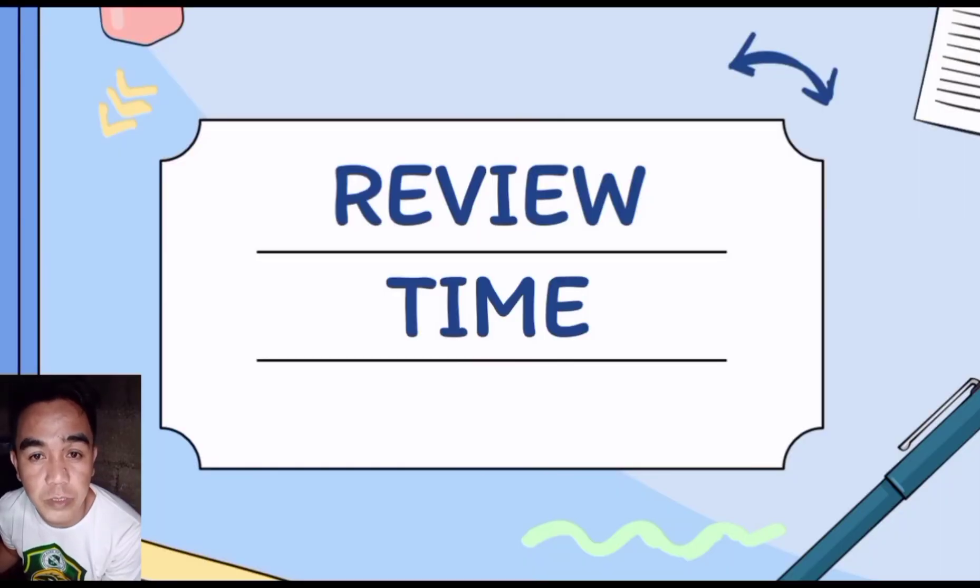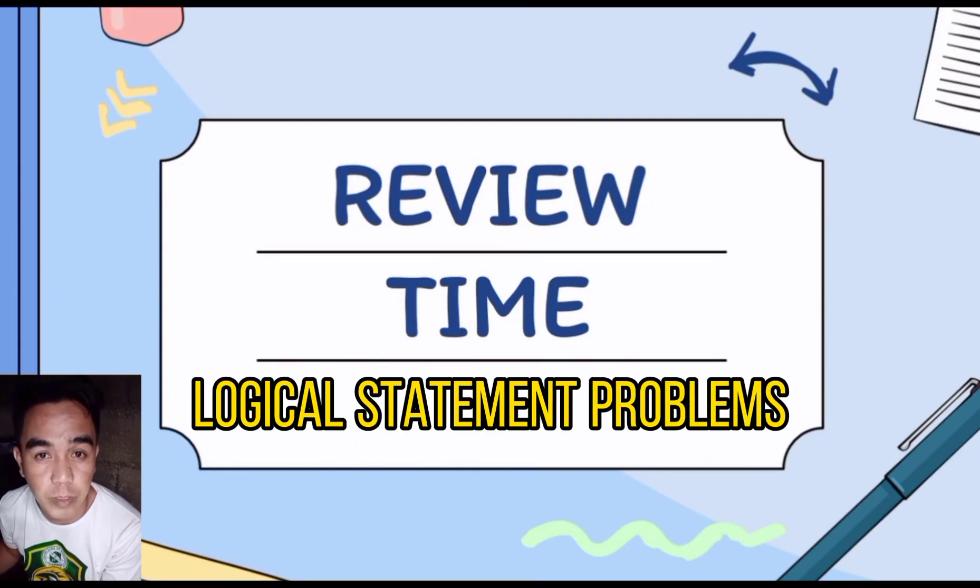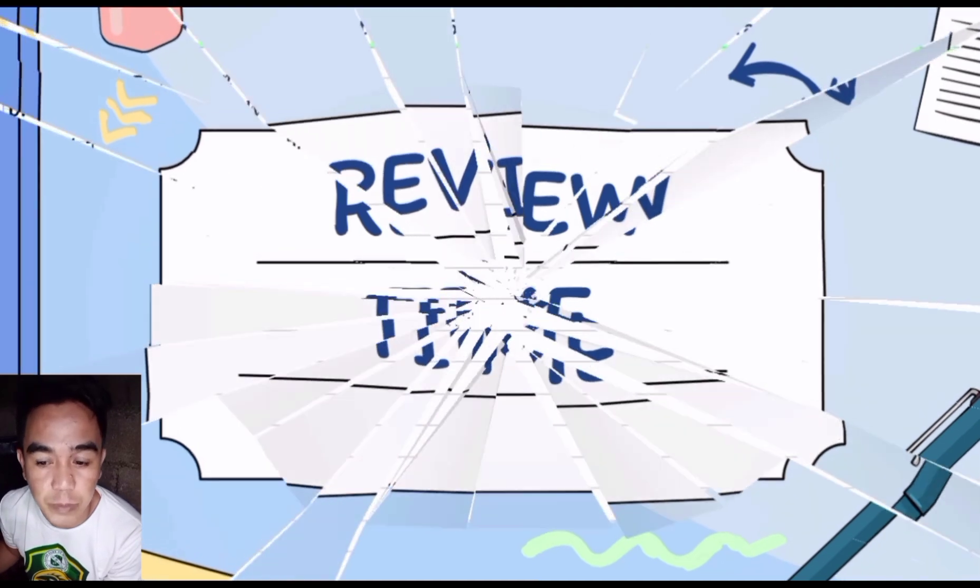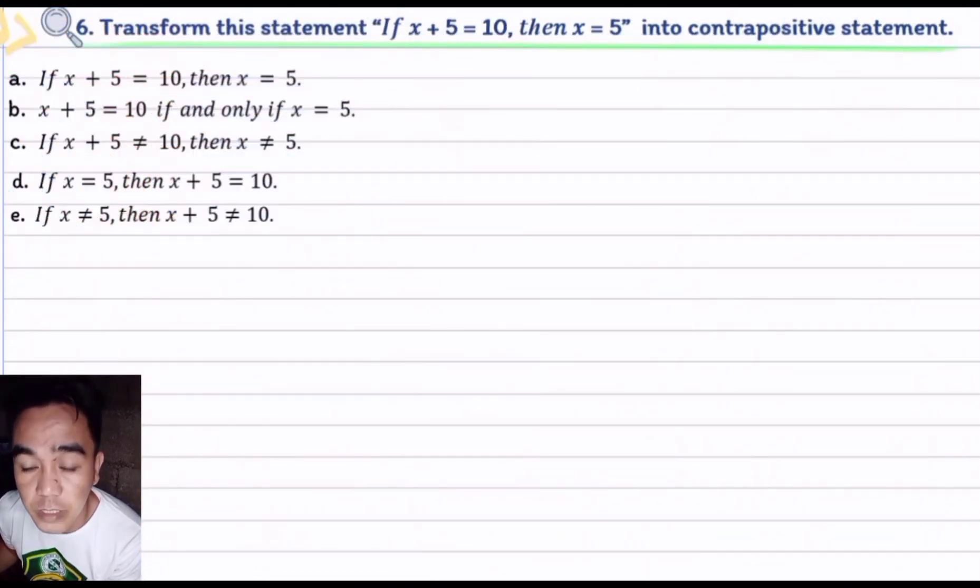It's review time, problem number six, a logical statement problem. Let us read the problem: transform this statement 'if x plus 5 equals 10 then x equals 5' into contrapositive statement. Before we solve and analyze this problem, let's remove the word 'if' and the word 'then' to have the original statements which are x plus 5 equals 10 and x equals 5.